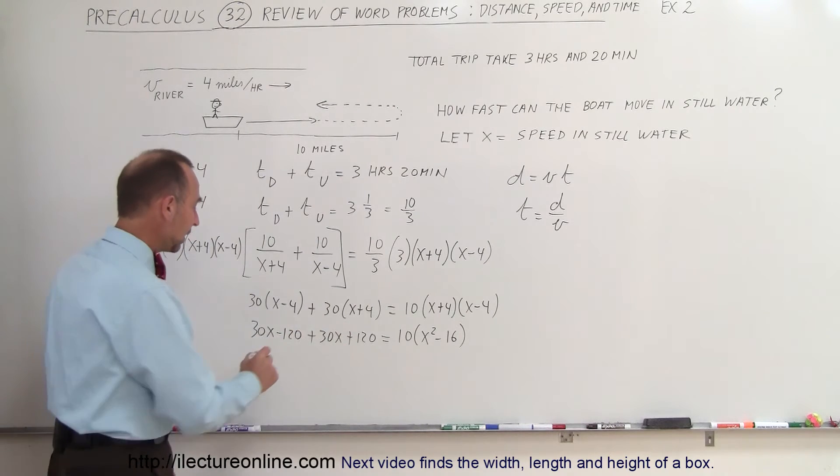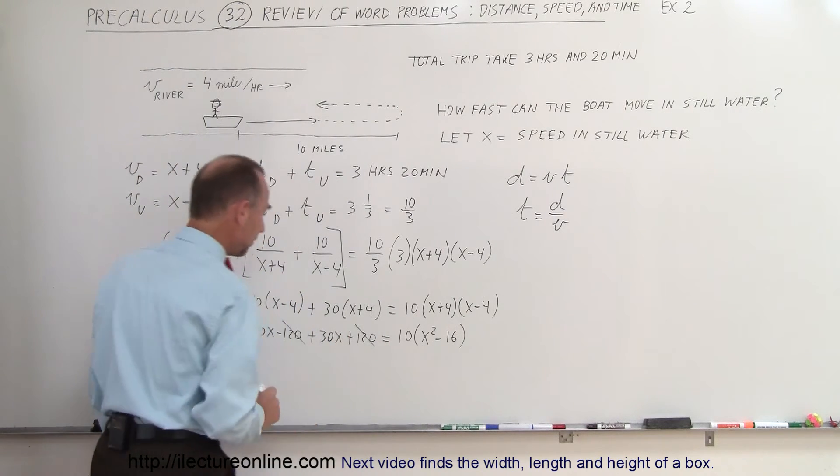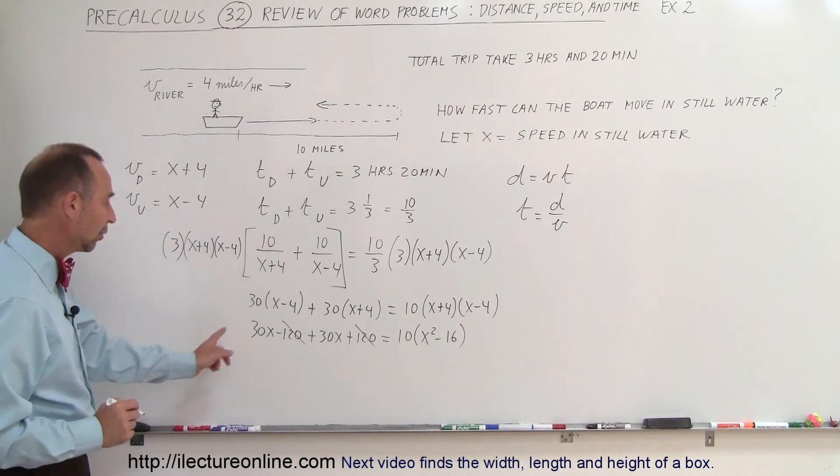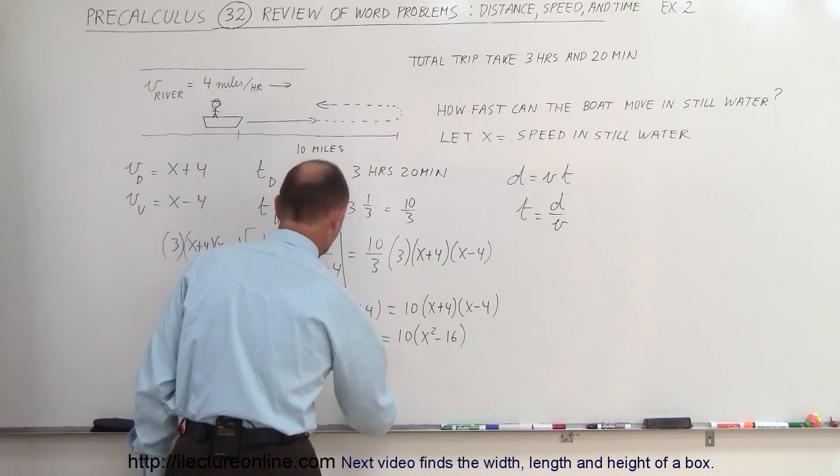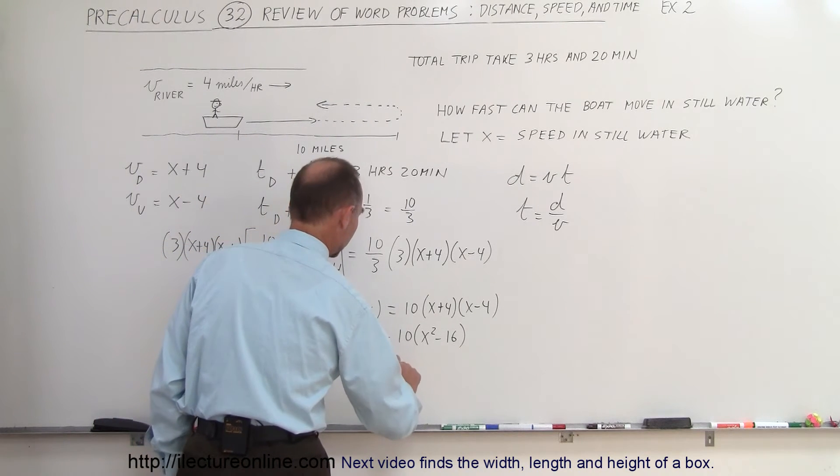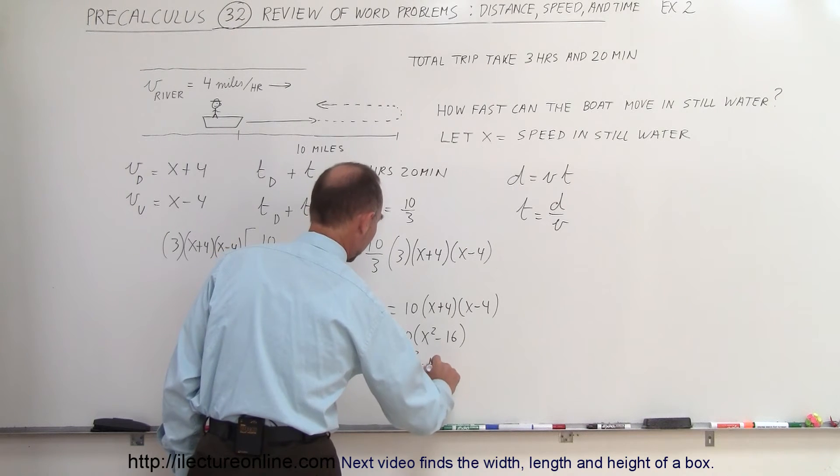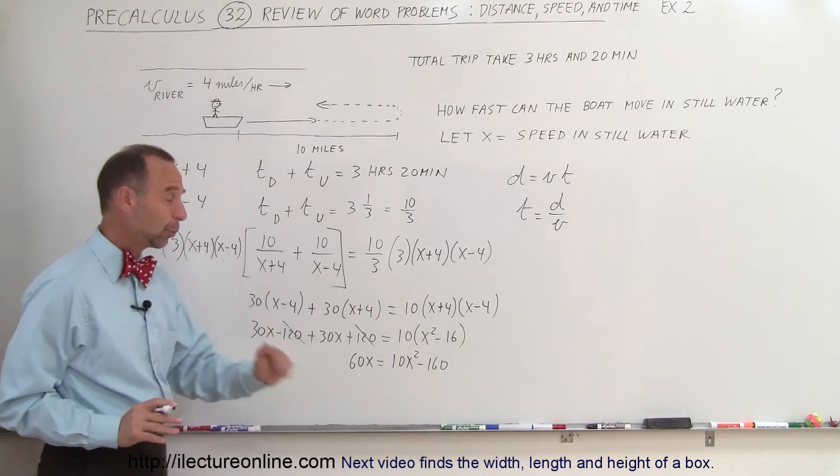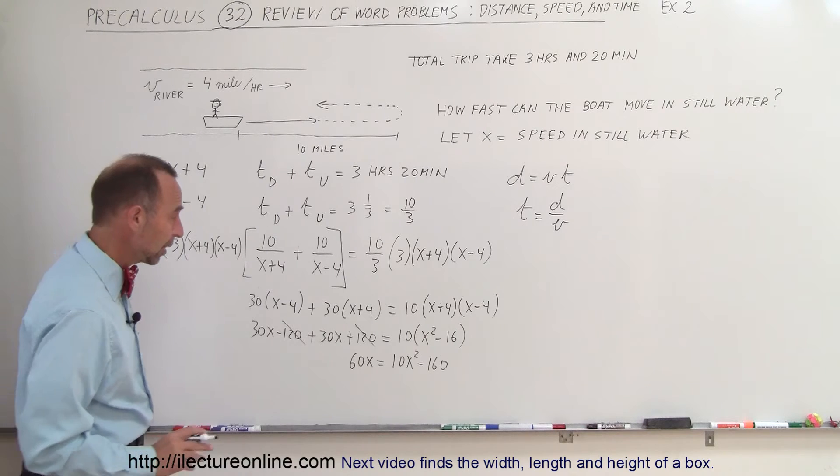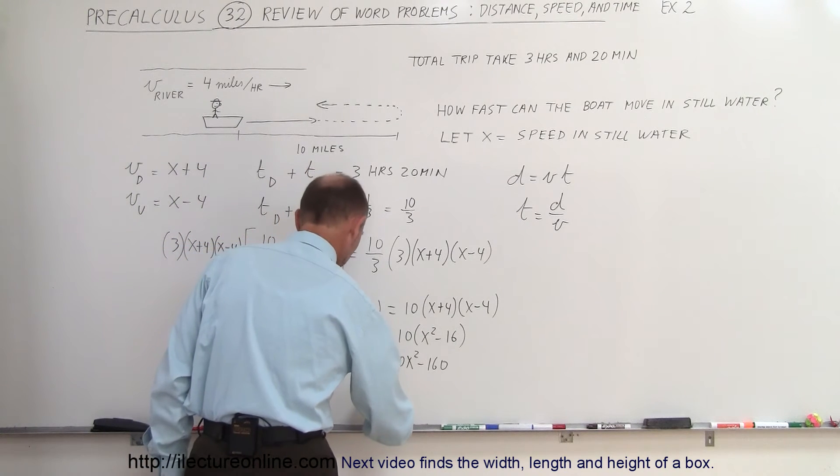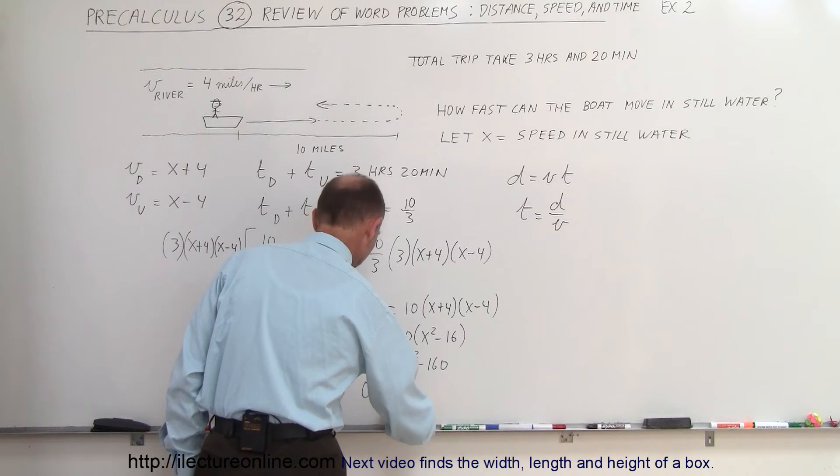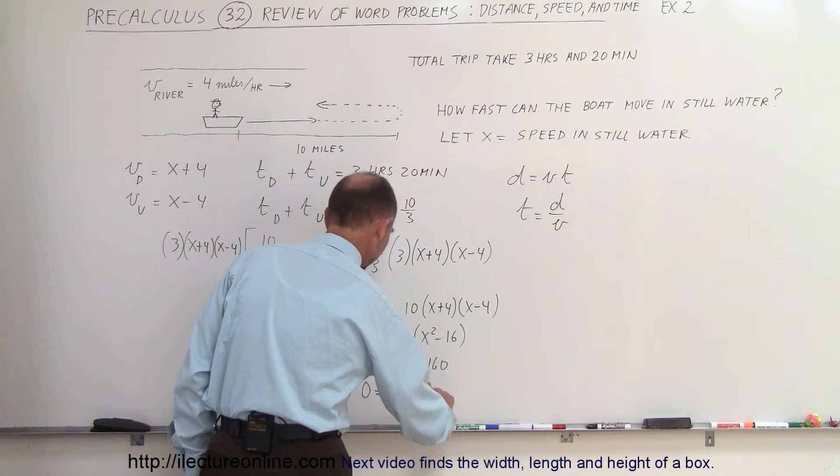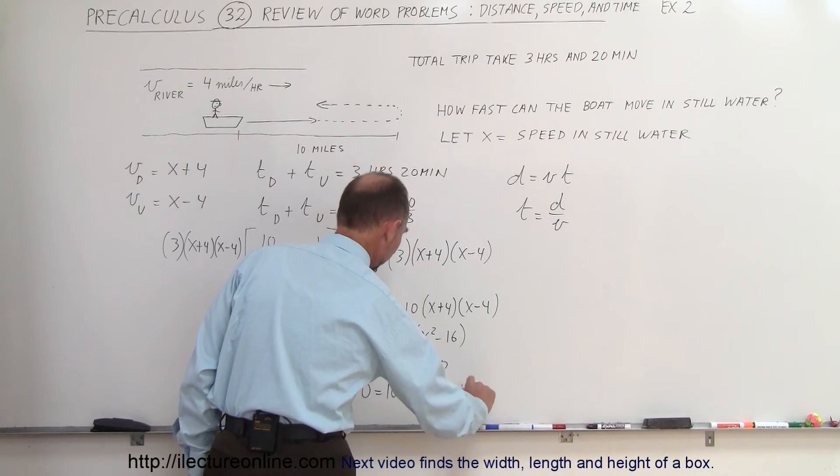Here we see that we can get rid of the 120s, because it's plus and minus, so that's gone, and 30 plus 30 is 60x, so we end up with 60x is equal to 10x squared minus 160. Moving everything over to one side to write that in a quadratic equation form, zero is equal to 10x squared minus 60x minus 160.